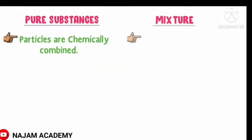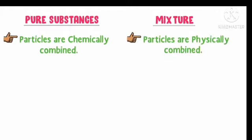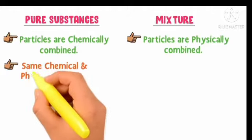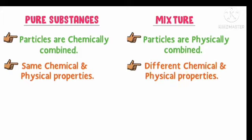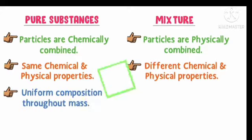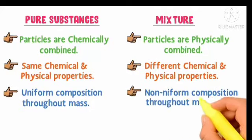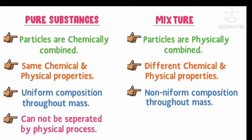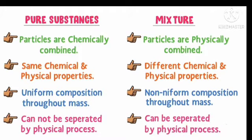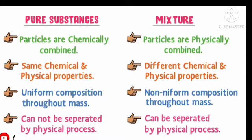Differences between pure substances and mixtures: In pure substances, particles are chemically combined; in mixtures, particles are physically combined. Pure substances have the same chemical and physical properties; mixtures have different chemical and physical properties. Pure substances have uniform composition throughout the mass; mixtures have non-uniform composition. Pure substances cannot be separated by a physical process; mixtures can be separated by a physical process. For best example, water and salt are pure substances and cannot be separated. A mature example of a mixture is atmospheric gases.